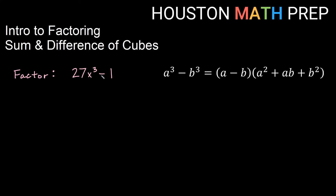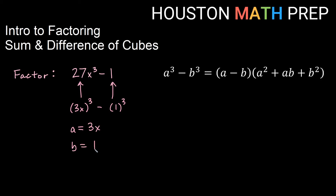Let's look at one more — this is now a difference of cubes, we have a minus. The formula is the same, but SOAP will apply the signs for us. We want to see 27X cubed as 3X all cubed, because 27 is 3 cubed. And 1 cubed is just 1. So we see this as (3X) cubed minus (1) cubed. For our formula, A is 3X and B is 1, and we'll build the short factor with just A and B: 3X and 1.